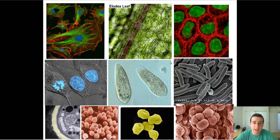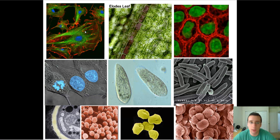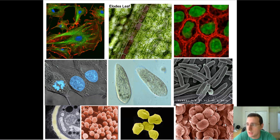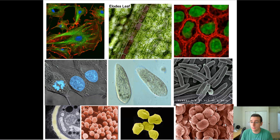As you can see, there are many different types of cells. In fact, in this picture here, you have representation of all the major kinds of groups of life on the planet. You have animal cells — on the top left, for example, is an animal cell. The top middle is a plant cell. The center is a protista cell — it's a paramecium. You also have examples of fungus cells on the bottom left, some bacteria on the right side, and some archaebacteria, which are ancient bacteria, on the bottom.